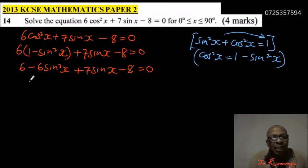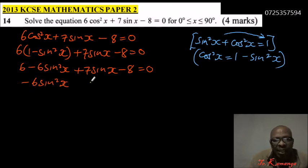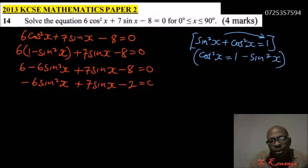Once you do that, we can get -6 sin²x, then we have +7 sin x. 6 - 8 is -2, equals 0.